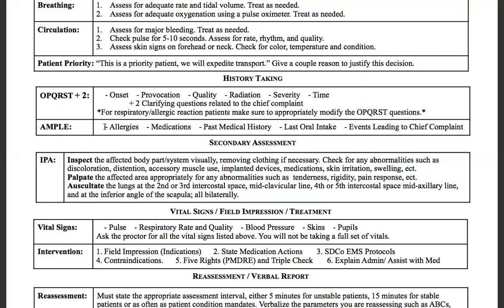Now go down to AMPLE, finishing off our SAMPLE history. Ask: 'Do you have any allergies? Are you currently taking any medications? What does your medical history look like — anything significant I need to know about? What was the last thing you ate? And what was leading up to this — is there any chance this pain or discomfort could have been caused by something else?' You want to rule out anything here — that's what the E is for.